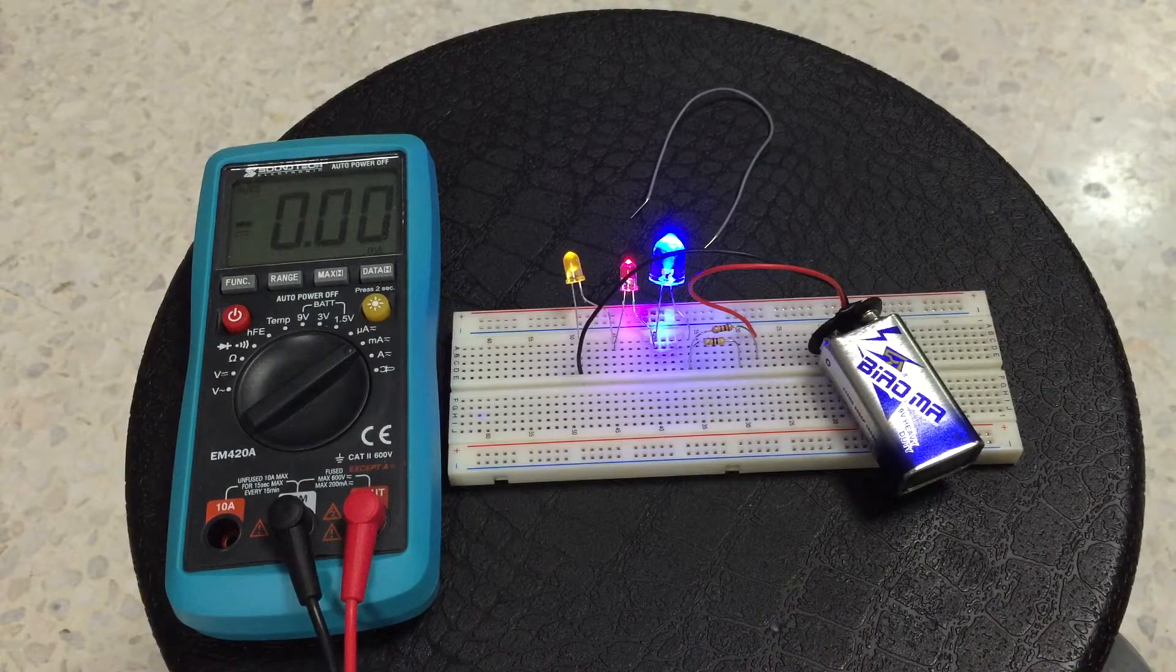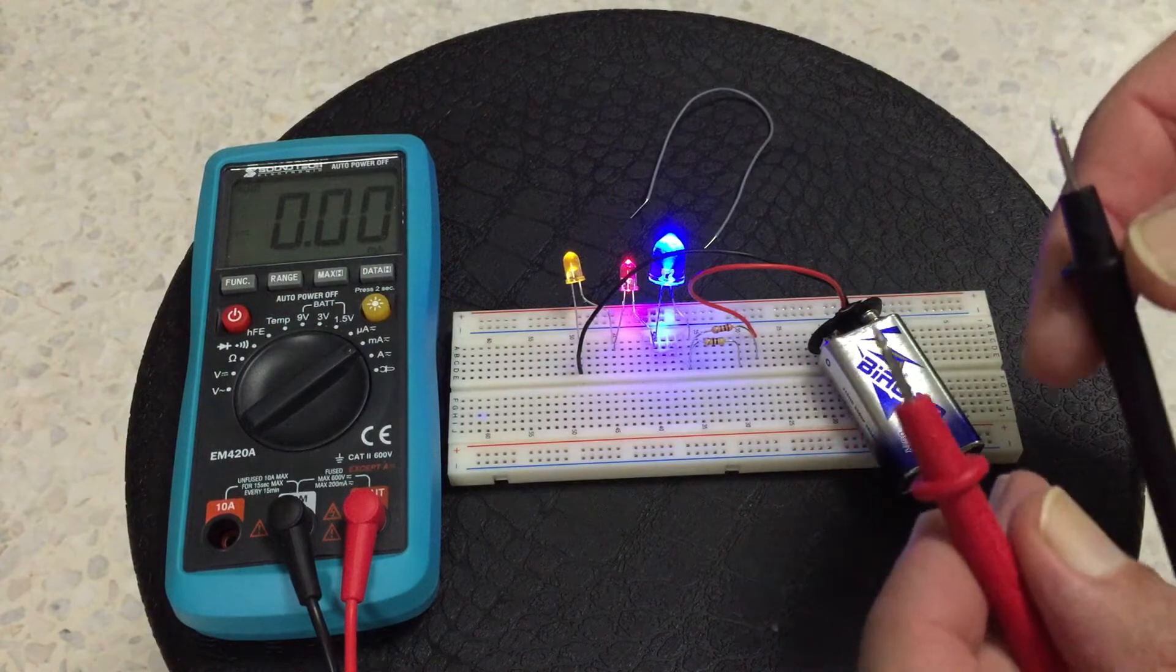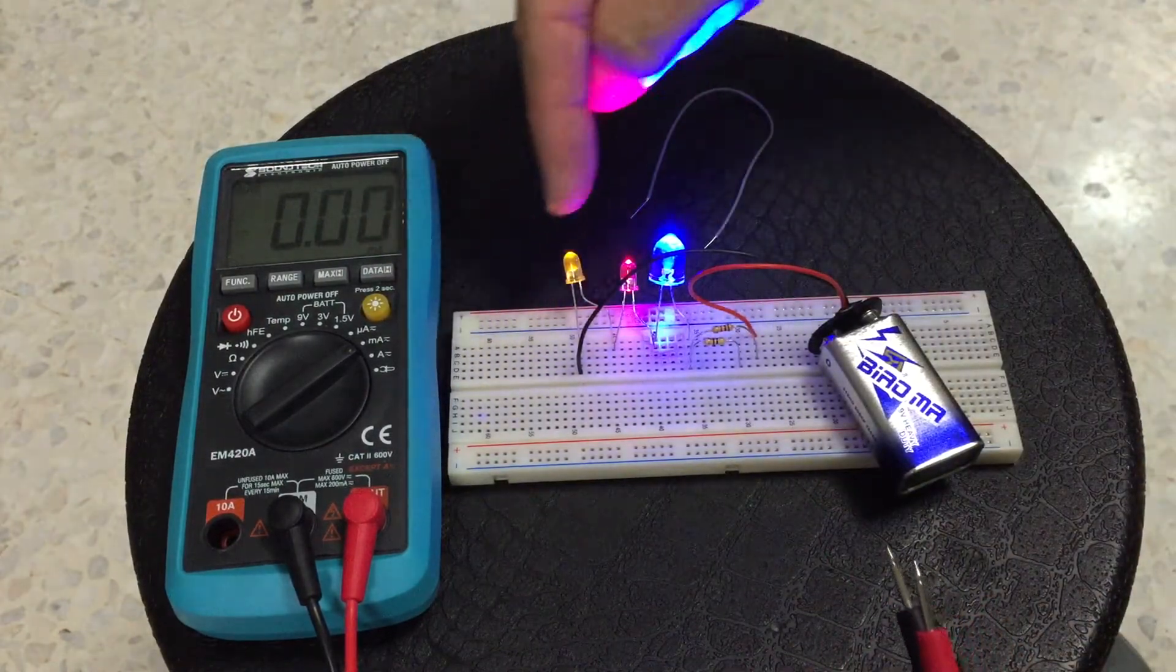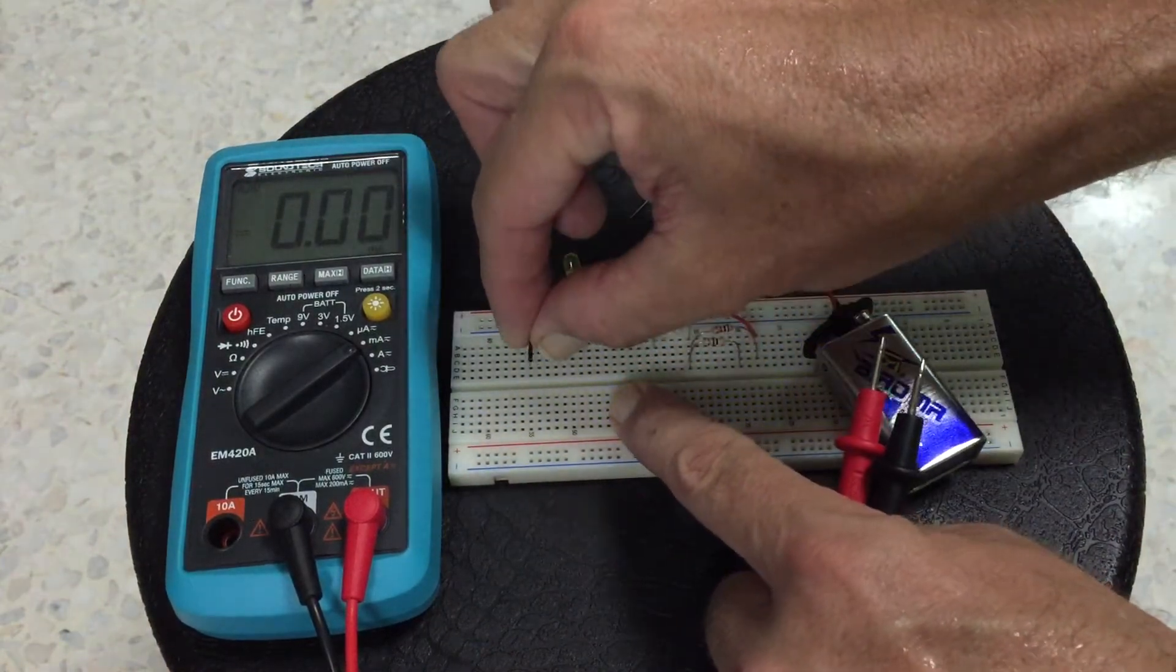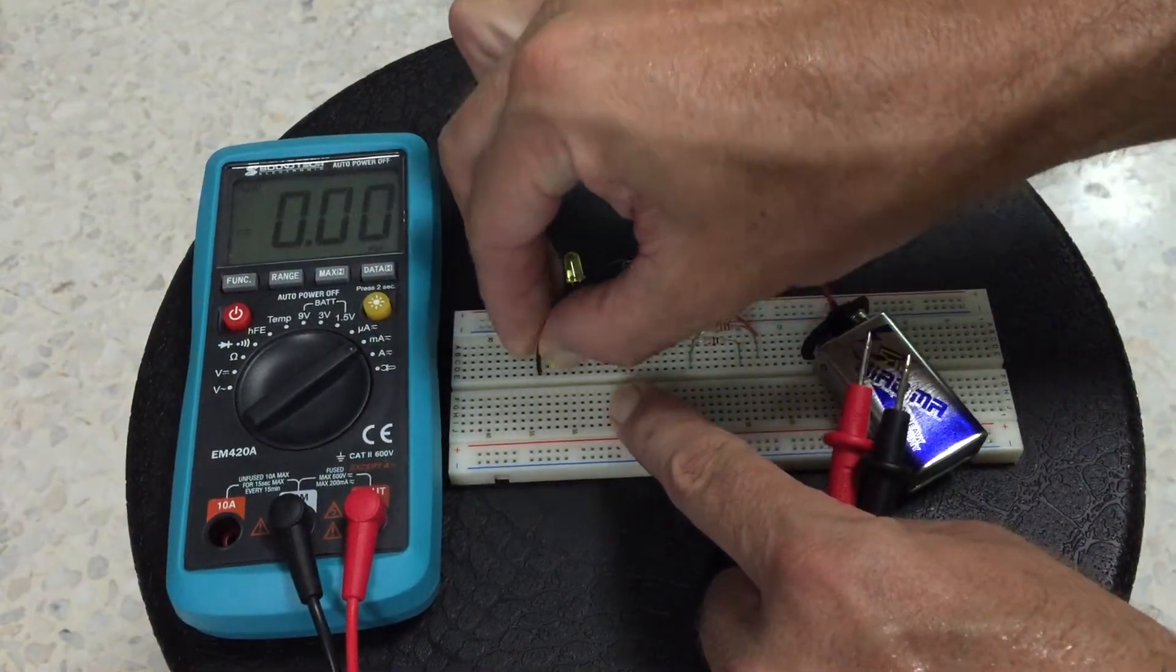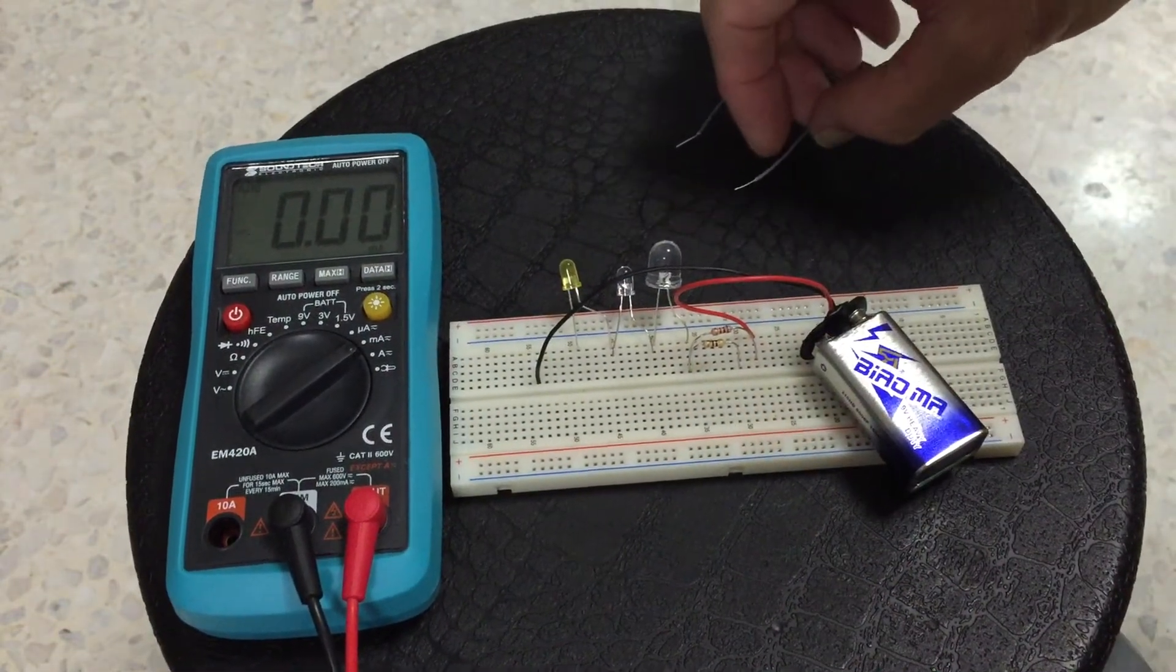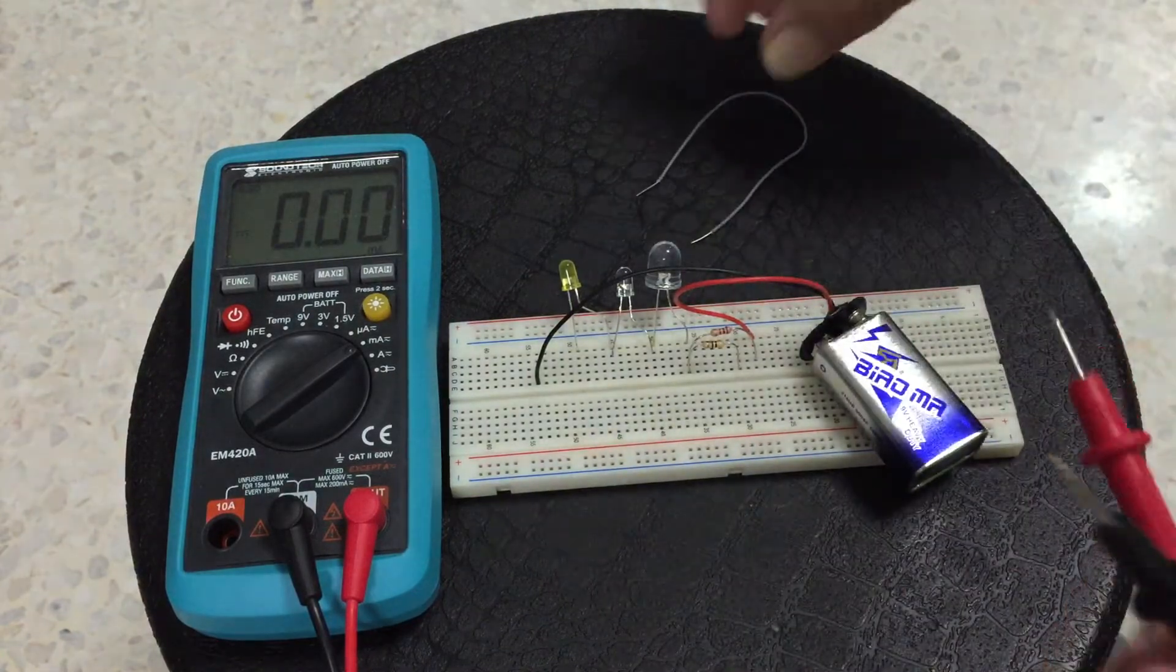We have a red probe and a black probe same as before and now we need to measure the current. Now we need to measure the current actually going through the wires through the LEDs. The only way we can do this is to break the circuit and dig in there again and then what we need to do is to fix the circuit.